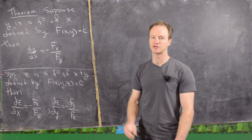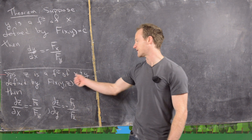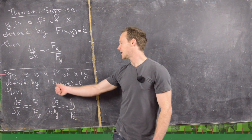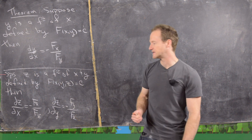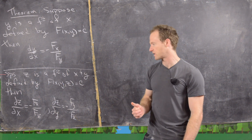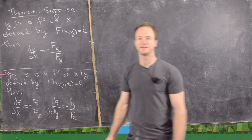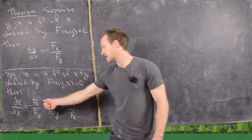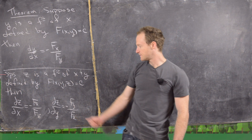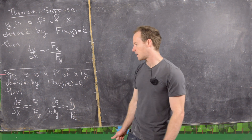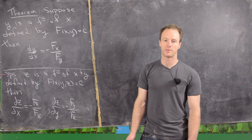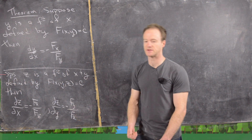Then we have a two-variable version of that. If we suppose that z is a function of x and y defined implicitly by F(x, y, z) equals a constant — in some ways this is like a level surface of a function of three variables — then the partial of z with respect to x is negative the partial of F with respect to x over the partial of F with respect to z, and the partial of z with respect to y is negative the partial of F with respect to y over the partial of F with respect to z.